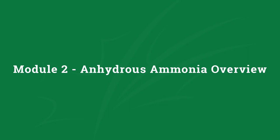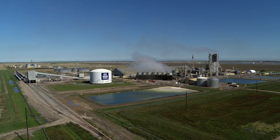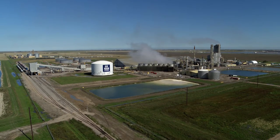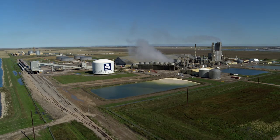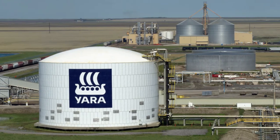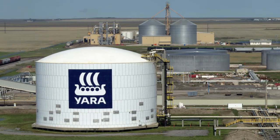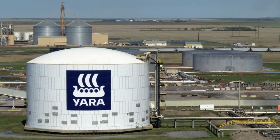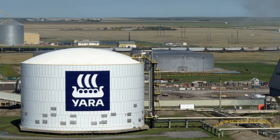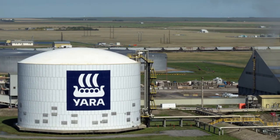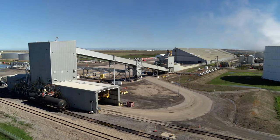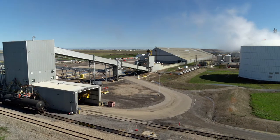This module briefly describes what anhydrous ammonia is, how it's made, and what it's used for. Anhydrous ammonia is a naturally occurring compound composed of nitrogen and hydrogen with the chemical formula NH3. Anhydrous ammonia is essentially pure ammonia — anhydrous means it has very little water in it, typically about 0.2%. Earth's atmosphere is approximately 78% nitrogen. Anhydrous ammonia production uses naturally occurring nitrogen from the air combined with hydrogen, which generally comes from natural gas, although it can also be produced from other hydrocarbons such as coal.